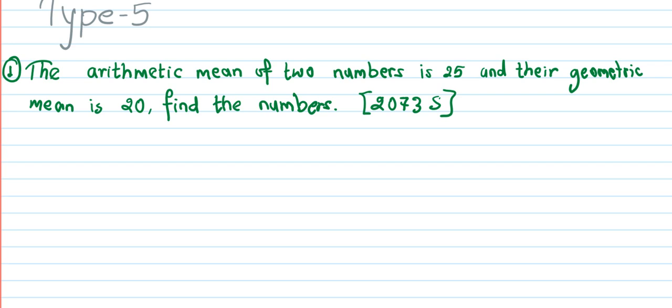First of all, as always, we need to identify what is given. Write down the given information and form equations from it. We are given that the arithmetic mean of two numbers is 25, and the geometric mean is 20. First, write the given information, then determine what we need to find.